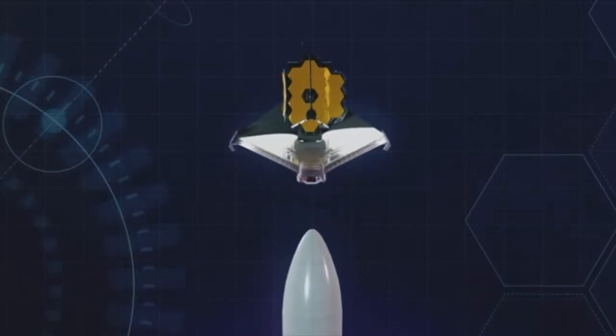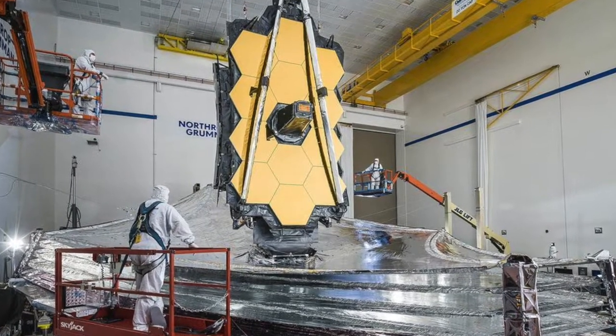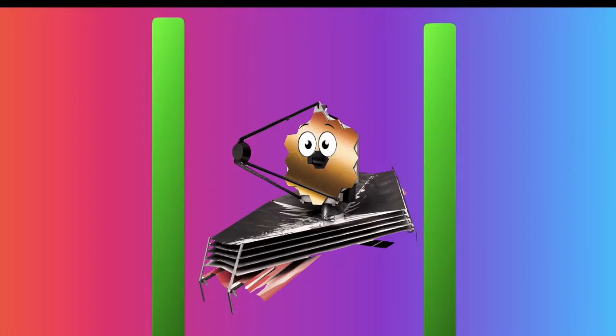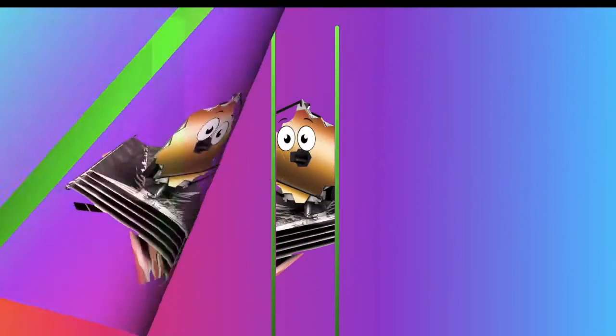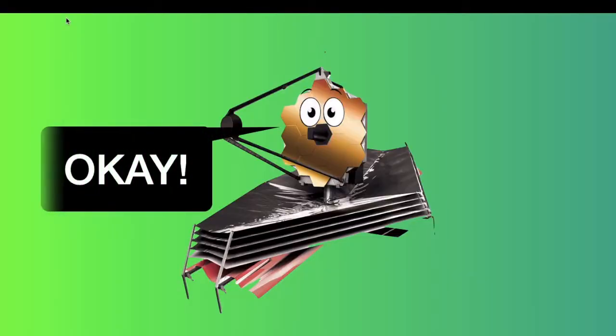Number 3. The James Webb Telescope can fold. To bring this massive craft, almost the size of a truck, to space, NASA had to cram it in a small rocket. To do this, NASA folded the telescope in such a way that it takes up less space. When the telescope was released into space, it started to unfold itself, an ongoing process at the time of this video's publish date.